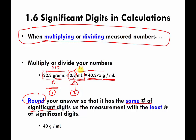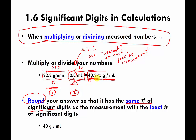The 0.8 is our weakest or least precise measurement, with only one significant digit. Because of that, we have to round our answer. Even though the calculator spits out 40.375 — which has five significant digits — we can't write five significant digits because our least precise number only had one. So the rule is: round your answer to one significant digit.